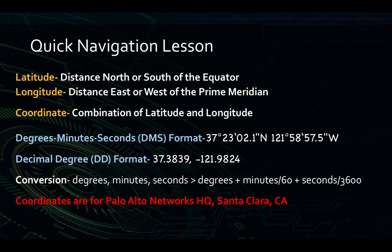Let's do a really quick navigation lesson so everyone is on the same page. First, let's go over some terms. Latitude is a measure of distance north or south of the equator, the center line of the Earth. Longitude is the distance east or west of the prime meridian. A coordinate is a combination of those two numbers to give us a location on the planet. Coordinates are typically written as latitude first, then longitude, as you'll see in the examples below.